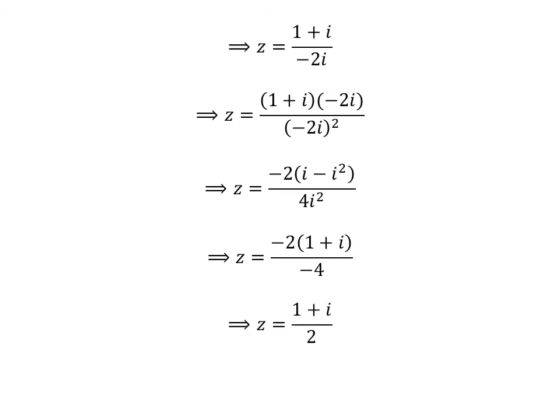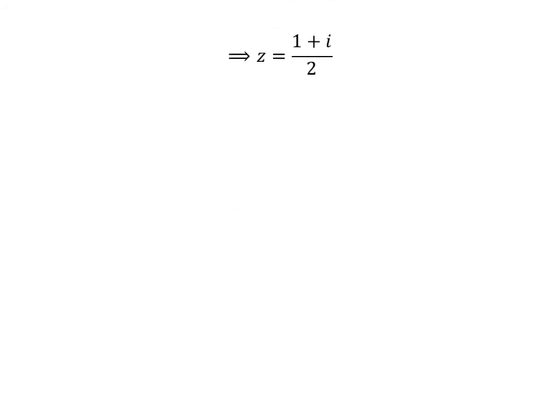Cancelling out the common factor minus 2 in the numerator and denominator gives us z is equal to 1 plus i upon 2. The above expression can be written as sum of two fractions, thus z is equal to half plus half of i.